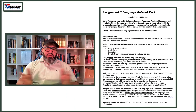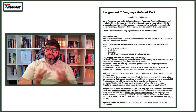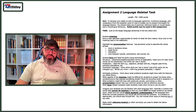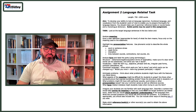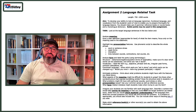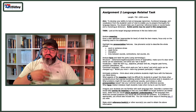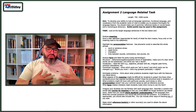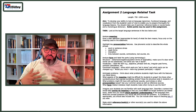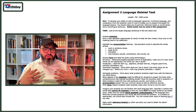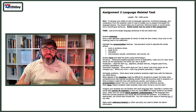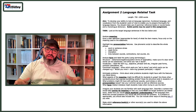This is Assignment 2: Language Related Tasks. The length is 700 to 1000 words. The aim is to develop your ability to look at language — grammar, functional language, and vocabulary — from the students' point of view, to enable you to prepare thoroughly for language lessons. You should make use of grammar reference books, course books, and a monolingual dictionary. Bullet points may be used.